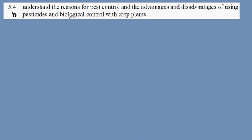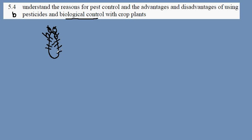IGCSE Biology Syllabus Statement 5.4b — here we concentrate on the biological control of pests. An example of this was in Australia: the prickly pear cactus of North America was introduced into gardens and escaped into the countryside, where it flourished under the Australian climate and ecosystem.